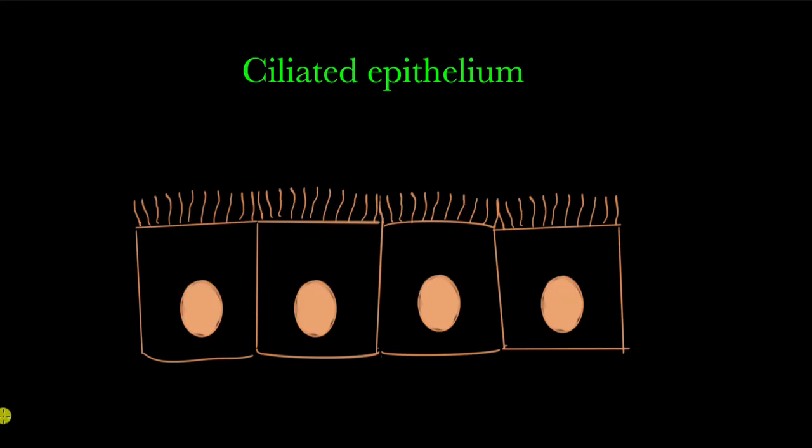In ciliated epithelium, the epithelial cells contain hair-like structures called cilia. These are the cilia, the hair-like structures, and these are the epithelial cells, which can be cuboidal or columnar.